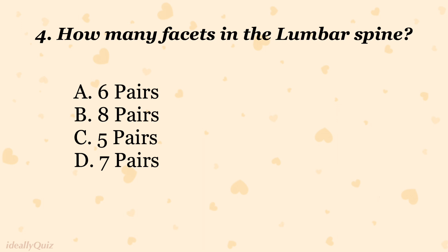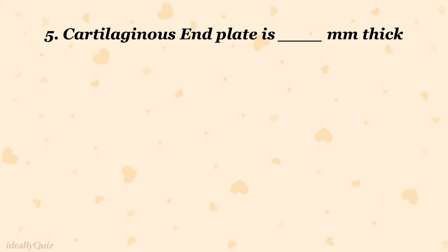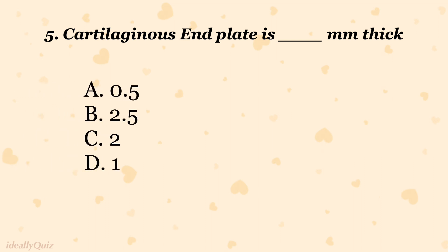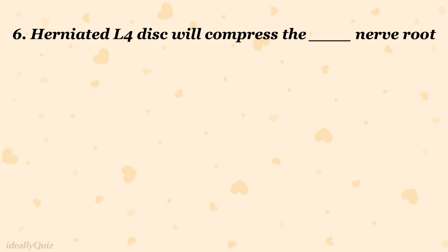How many facets are in the lumbar spine? A) six pairs, B) eight pairs, C) five pairs, D) seven pairs. The correct answer is C) five pairs. The cartilaginous end plate is how many mm thick? A) 0.5, B) 2.5, C) 2, D) 1. The correct answer is D) one.